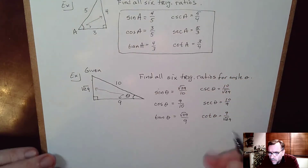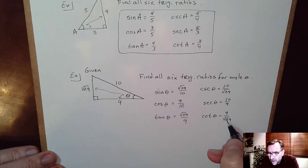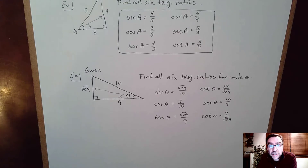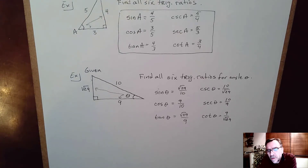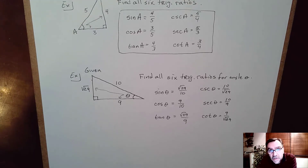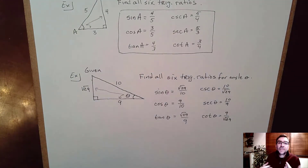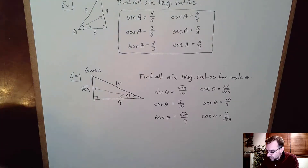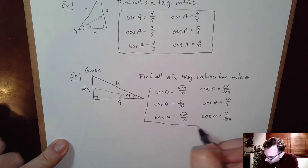Now we're done, but you might say that in algebra we weren't allowed to leave square roots in the denominator — do we have to rationalize? In trig we deal with square roots and reciprocals so often that we typically don't require rationalizing the denominators. In the book's answer sections they will rationalize, but if you stop here you would get full credit.